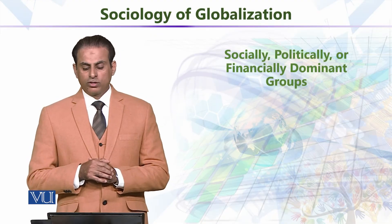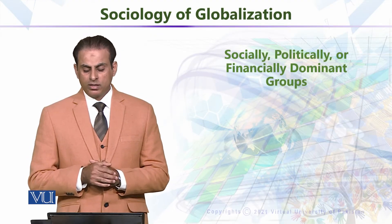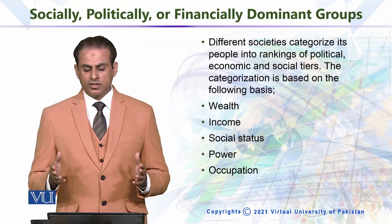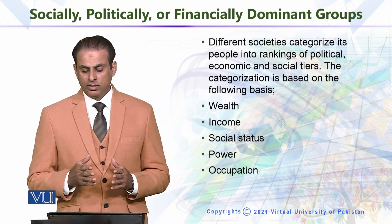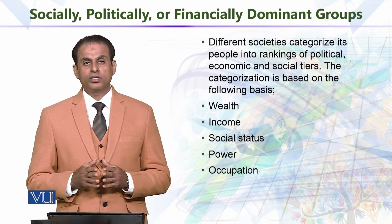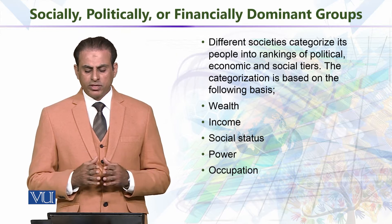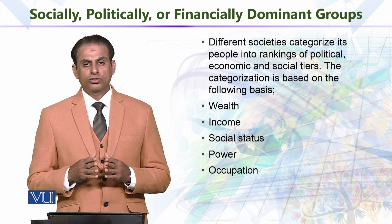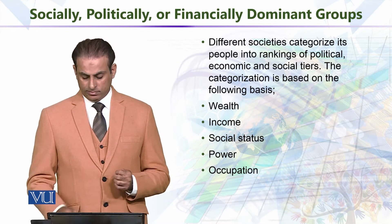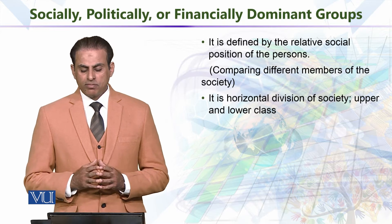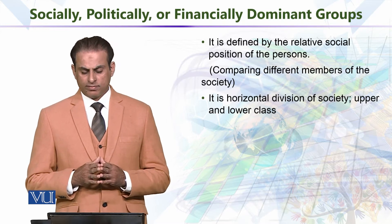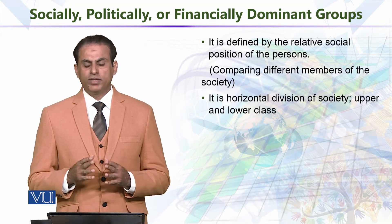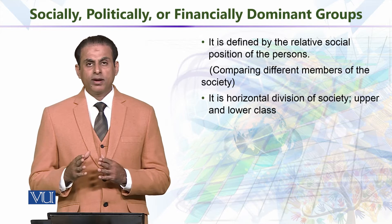In this module, we are going to talk about socially, politically or financially dominant groups. Different societies categorize their people into rankings of political, economic and social tiers. The categorization is based on the following basis: wealth, income, social status, power, and occupation. It is defined by the relative social position of persons, comparing different members of the society. It is a horizontal division of society — upper and lower class.